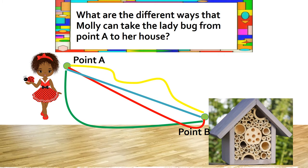For the blue path, Molly would move in only one direction. What is the name of that path? Molly could travel on a straight path. Good job, boys and girls — the blue path is a straight path.